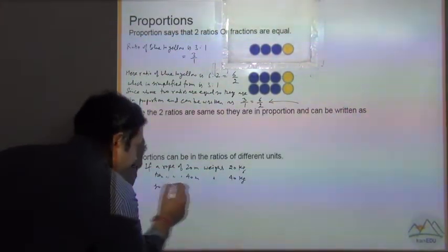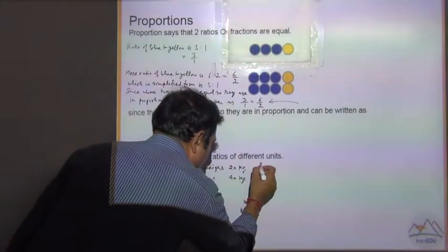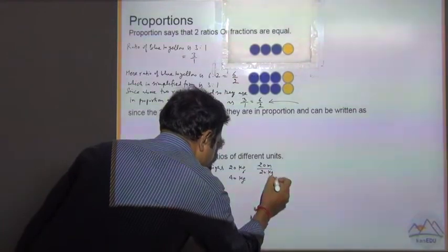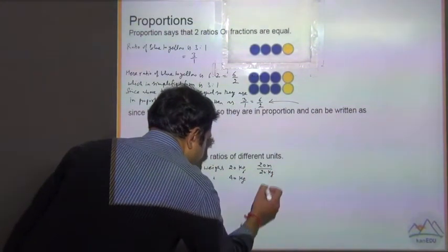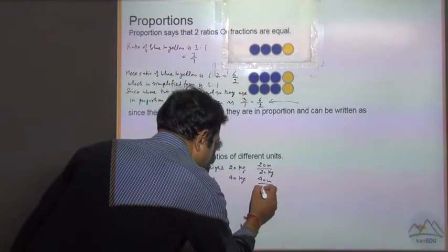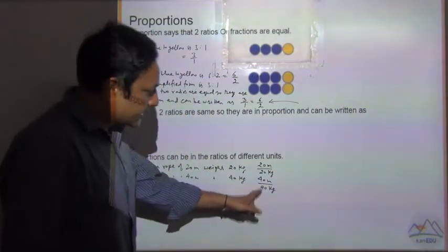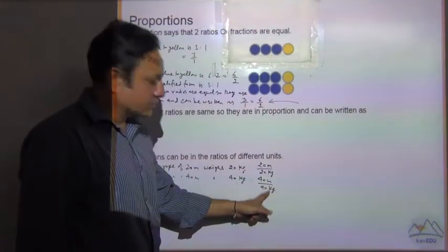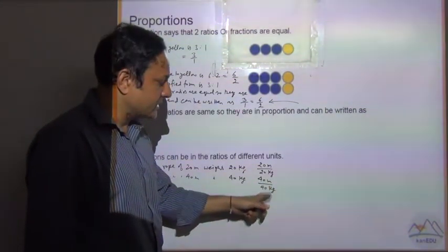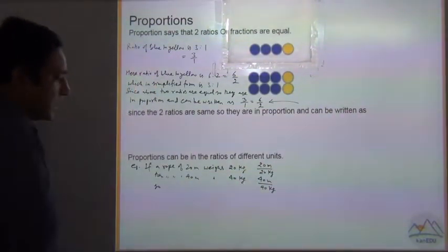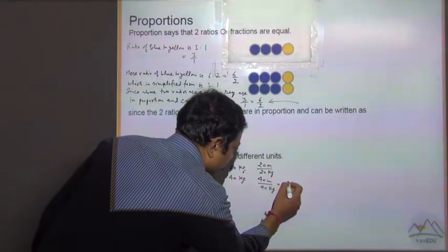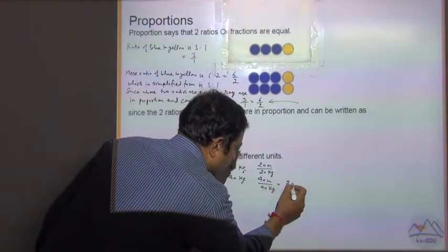We can take these two as proportion. 20 meter divided by 20 kg - this is the ratio. 40 meter divided by 40 kg. You cannot cut them because these are two different units. The two numbers cannot be cut because the units are different. But these two are in proportion because in simplified form this is equal to 20 by 20.